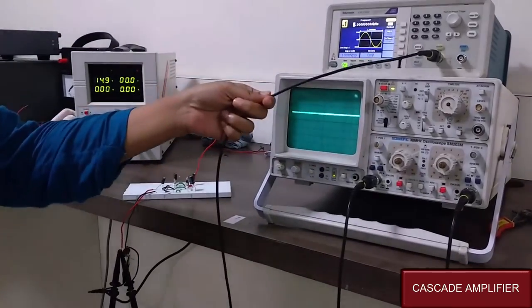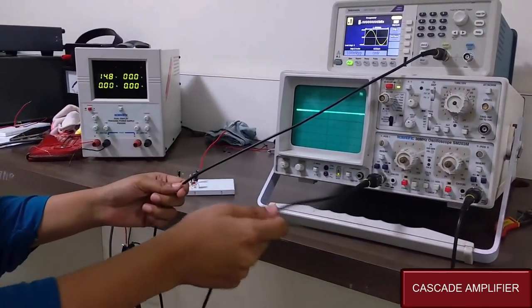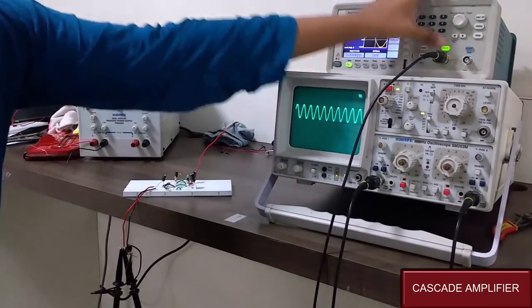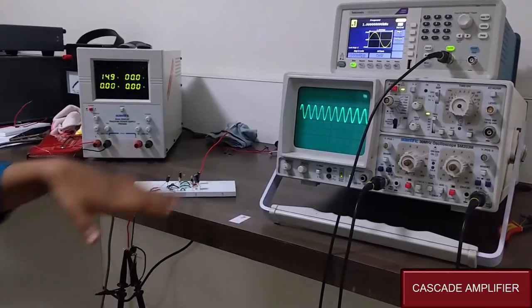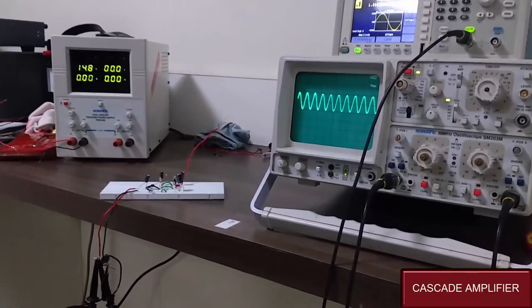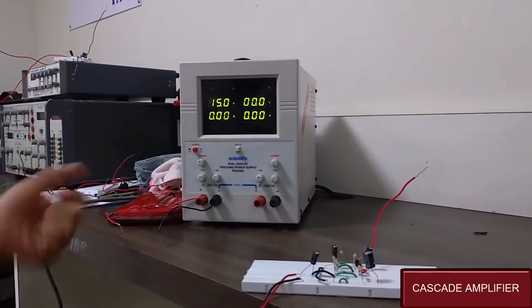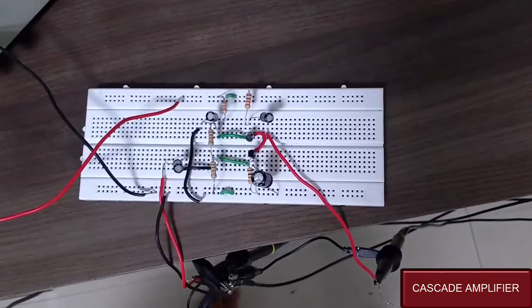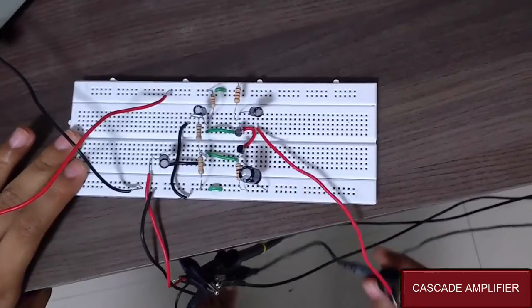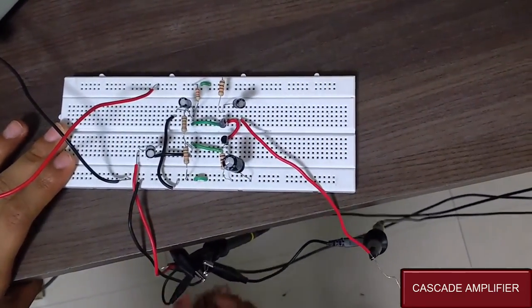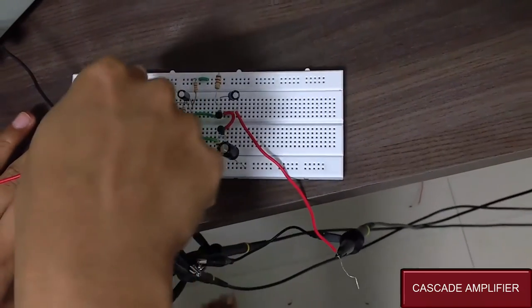Now we are giving input with the help of this probe, and we are seeing it with the probe for the first channel. This is the input we are getting. Let's give the voltage which we have already set at 15 volts and see the output. Here we have given the output and here the input, and these are the places where we have given positive and negative voltage.